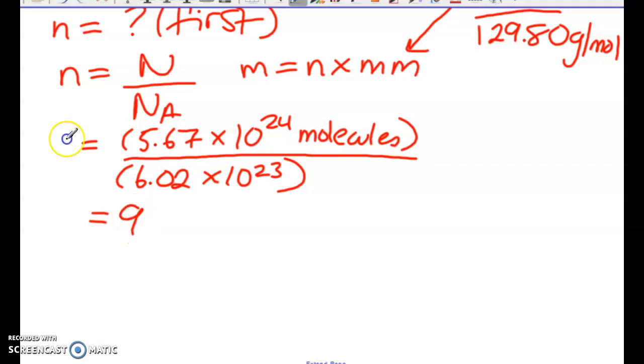Okay, so we get here 9.4186 moles. Now, I am not going to be rounding this to sig figs yet. Remember, it's only your final, final answer that we're going to do that with. So we're going to keep this as is, because now we're going to plug it in to solve for the mass.